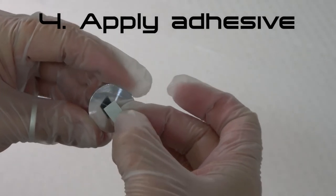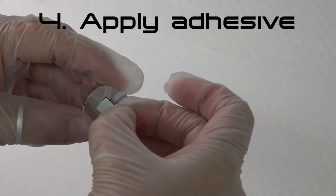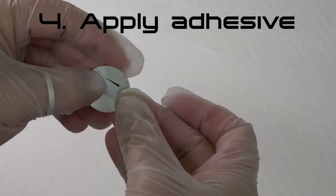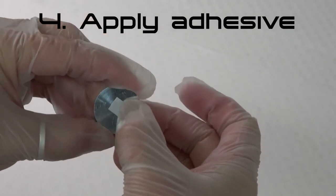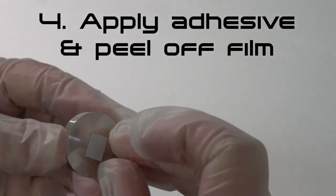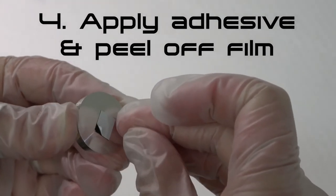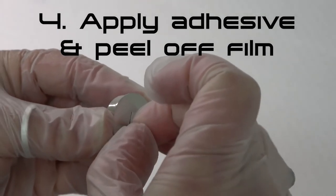Step 4: Place one side of the double-sided adhesive onto the SEM stub. Use only enough adhesive to ensure that the sample can be securely attached to the stub. Remove the protective film to expose the surface of the double-sided adhesive.